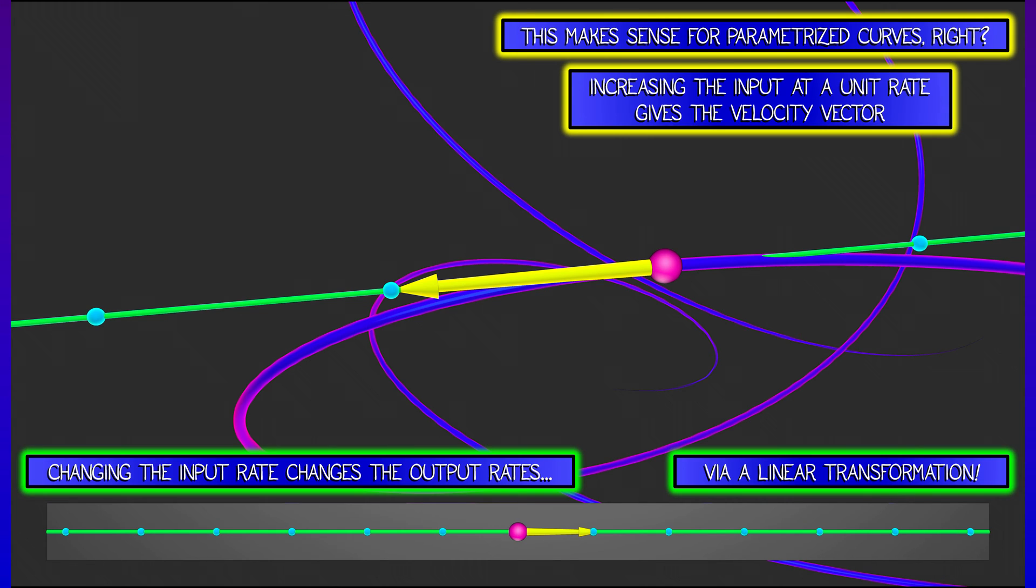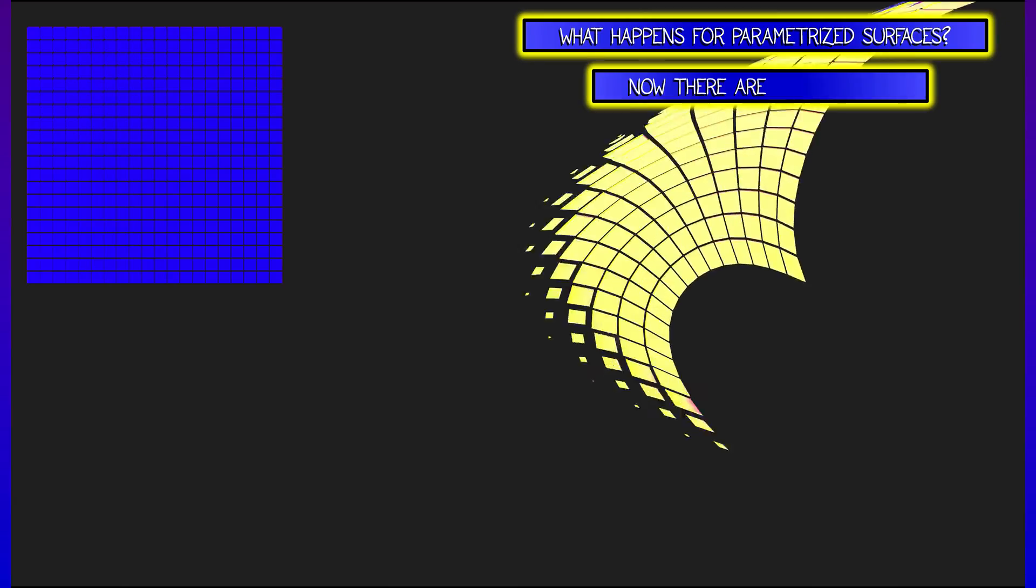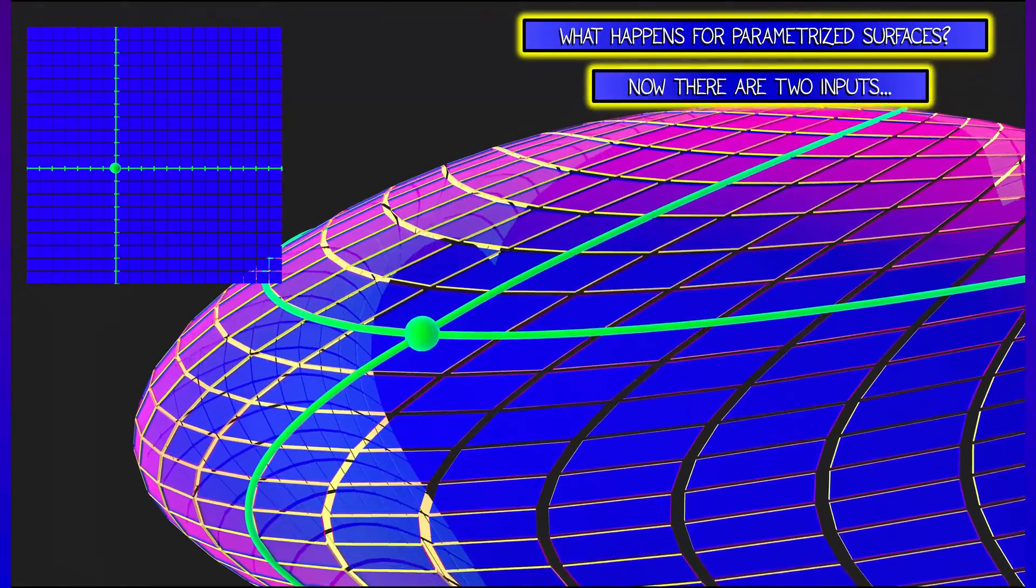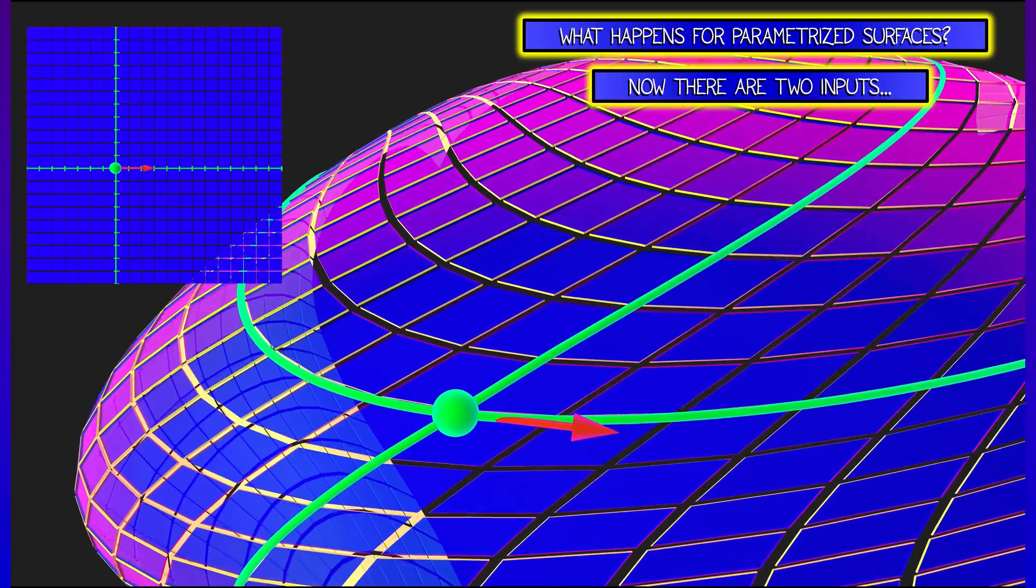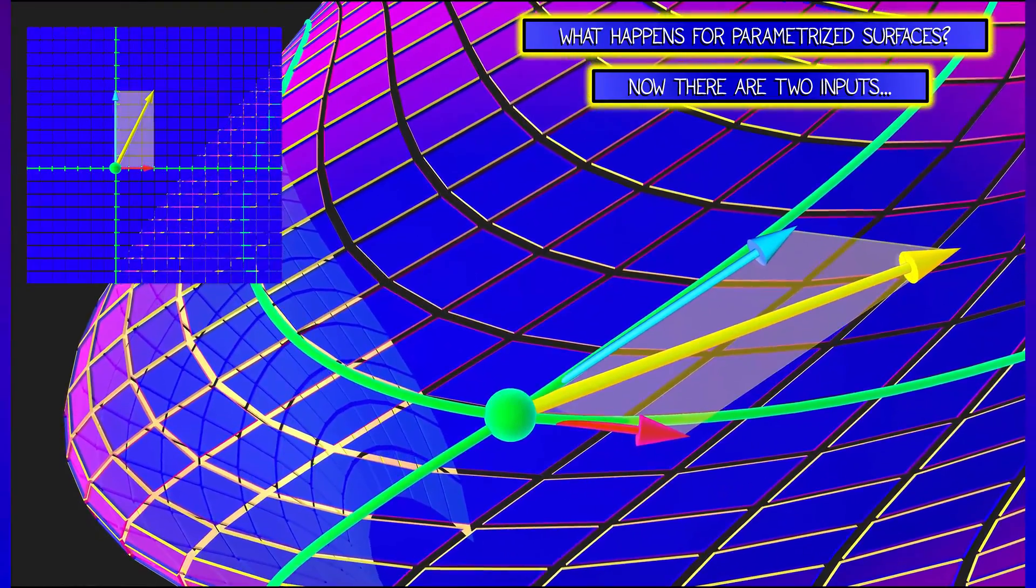Now, if I move to the case of a parametrized surface in 3D, now I have two inputs. And if I change each of those inputs at a certain rate, that gives me a pair of vectors based at the output point on the surface.